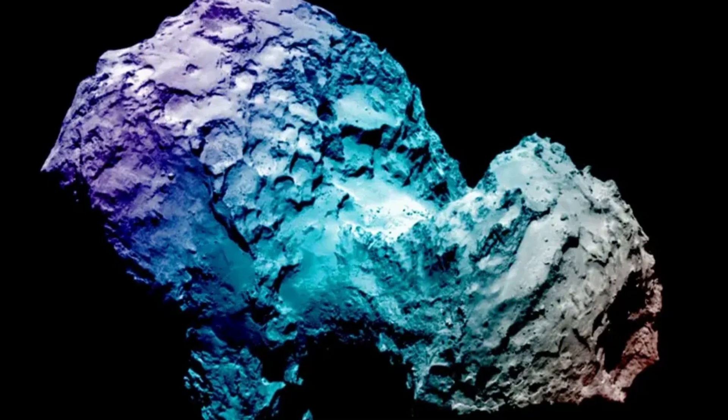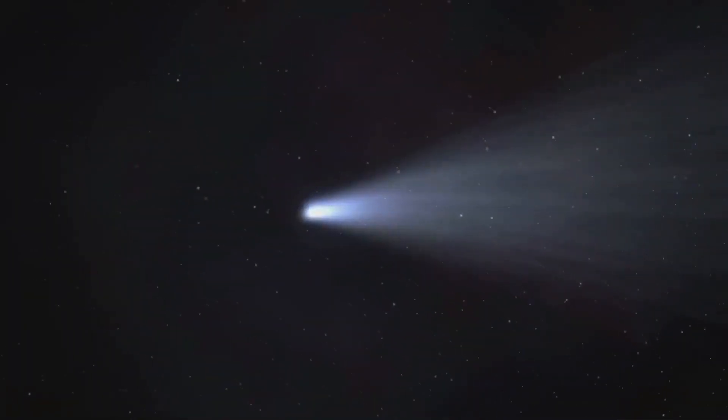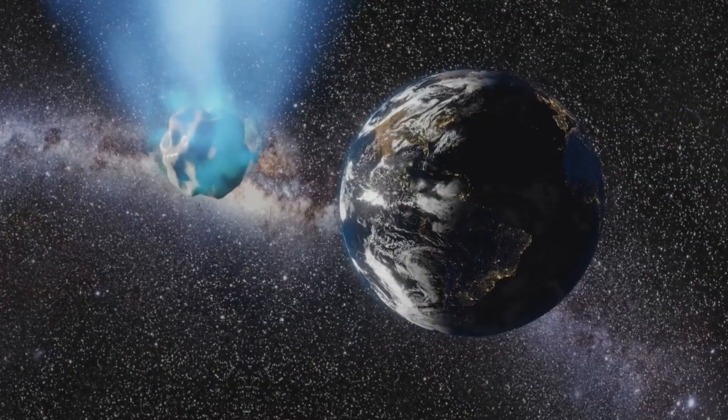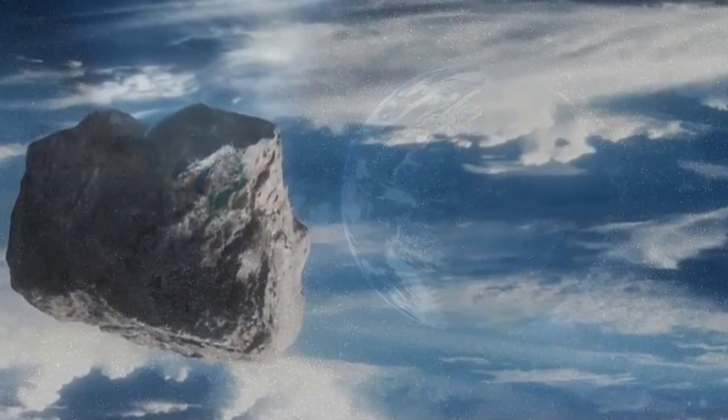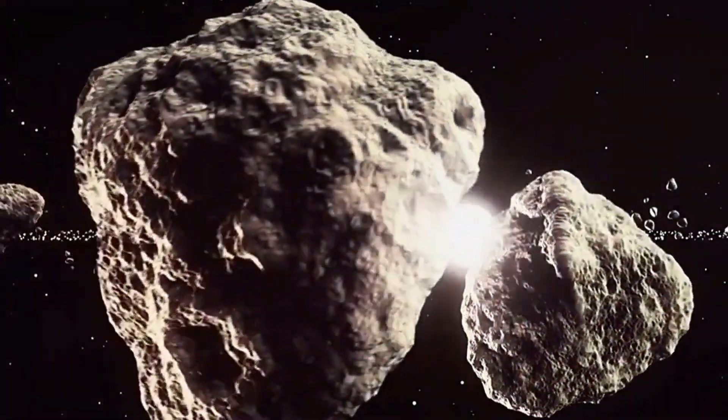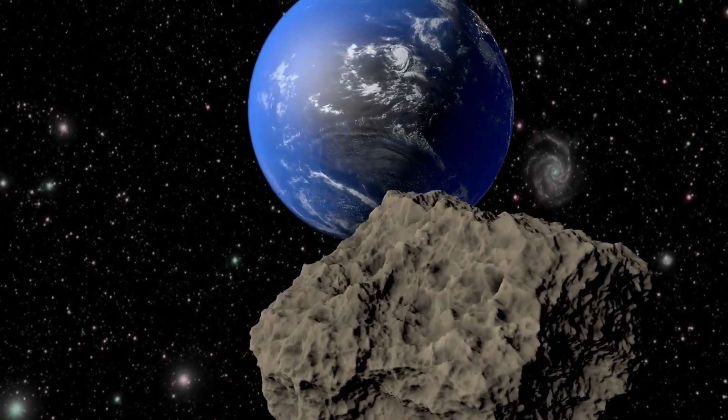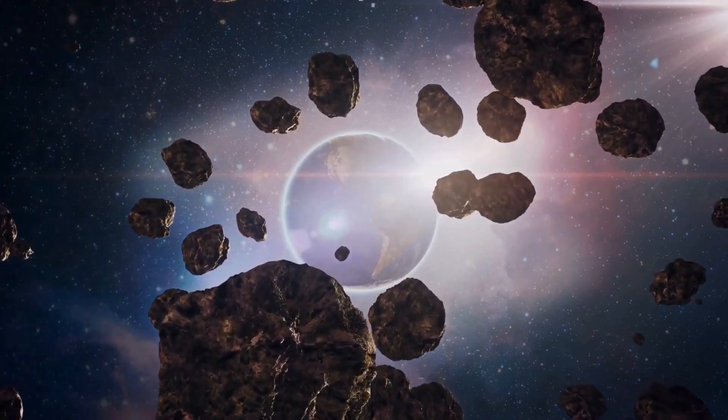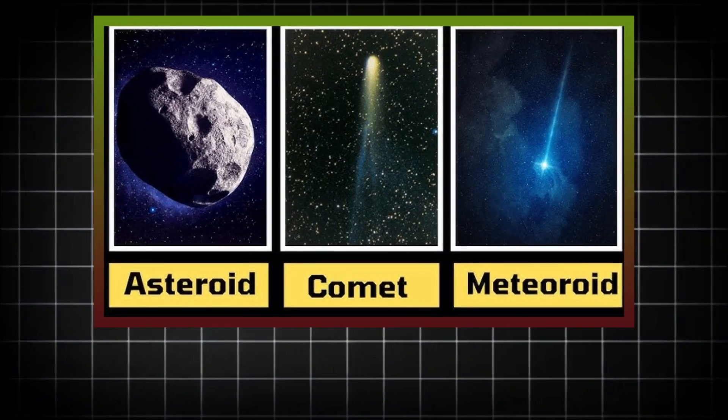This is why monitoring these objects is critical for planetary defense. Real-world connection: NASA's Planetary Defense Coordination Office (PDCO) works to identify and track near-Earth objects that might pose a risk to Earth. Their efforts include tracking asteroids, comets, and other small bodies that come close to our planet. While dark comets have yet to be fully integrated into these efforts, they could soon become a focus for these planetary defense programs.